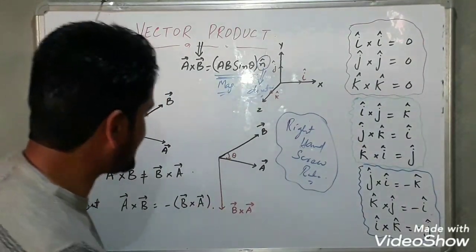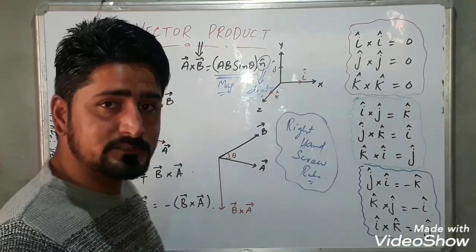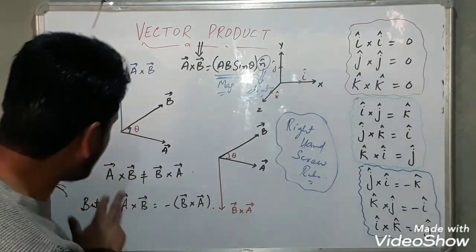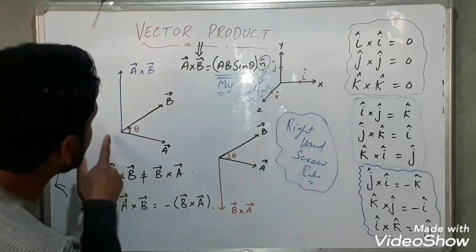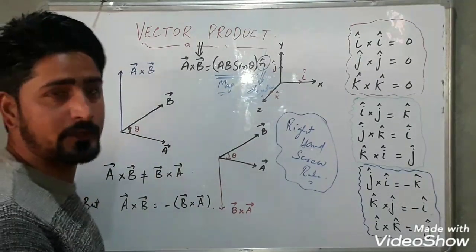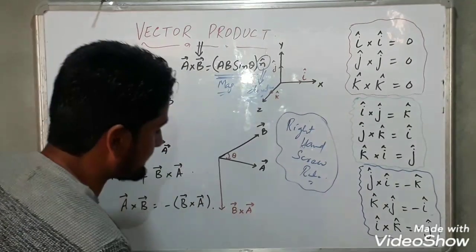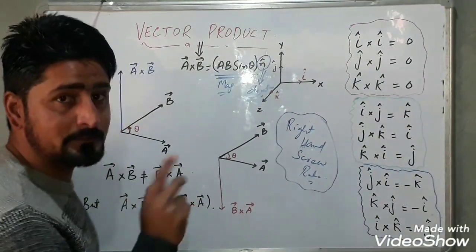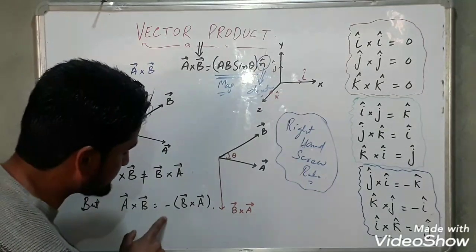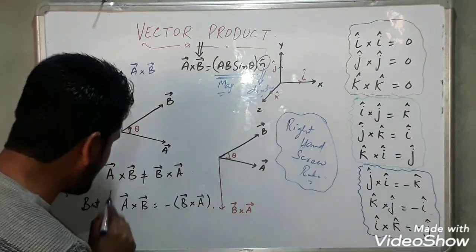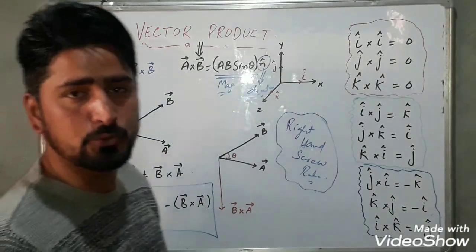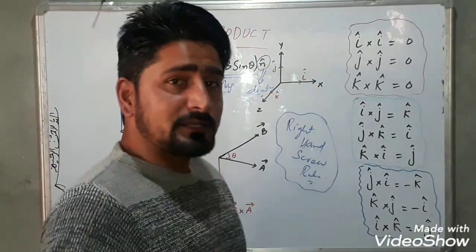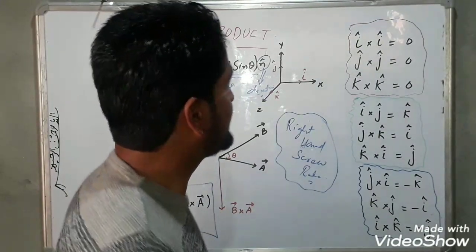After that, we also discussed that in the case of a scalar product the commutative law holds — meaning a dot b equals b dot a — but here we saw that a cross b is not equal to b cross a, because a cross b is upwards while b cross a is downwards. Their magnitudes are similar but their directions are opposite, so a cross b is always equal to minus times b cross a. This means the vector product does not obey the commutative law.